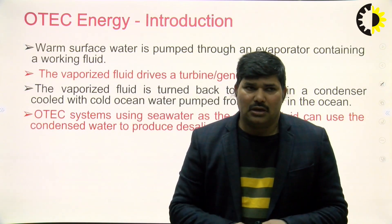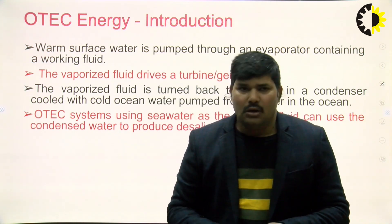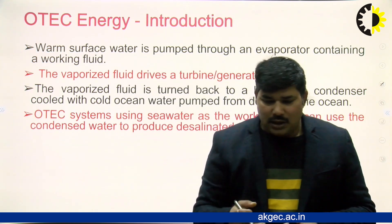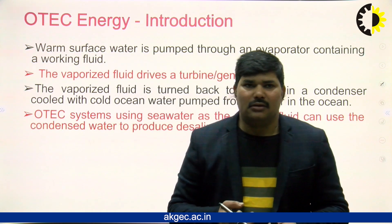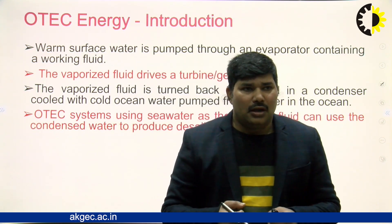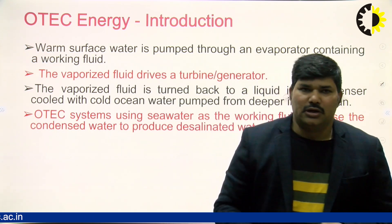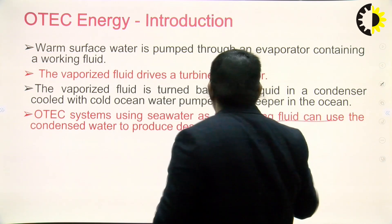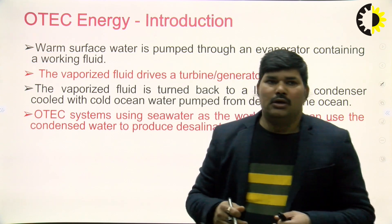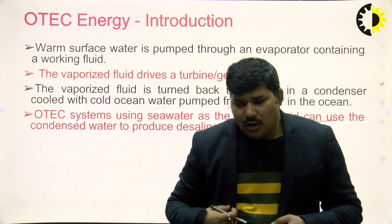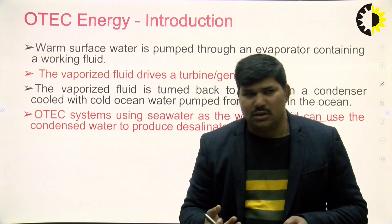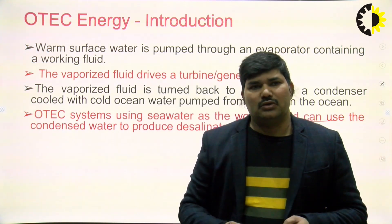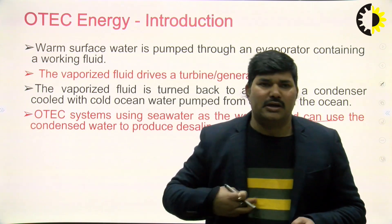In the OTEC energy system, warm surface water is pumped through an evaporator containing the working fluid. The vaporized fluid drives through the turbine and the generator. The vaporized fluid is then turned back to liquid in the condenser, cooled by cold ocean water pumped from deeper in the ocean. The OTEC system uses seawater as the working fluid and can be used in the condenser to produce desalinated water.